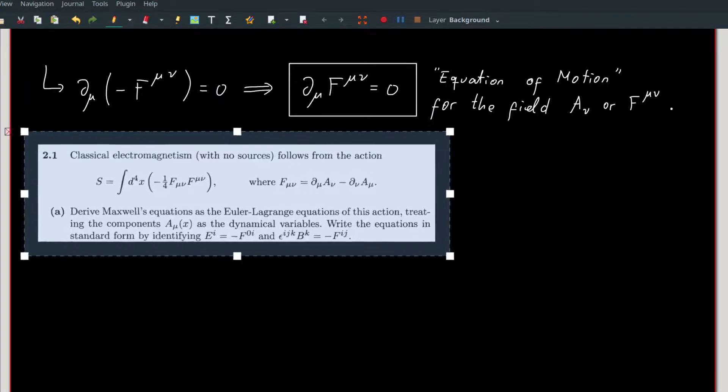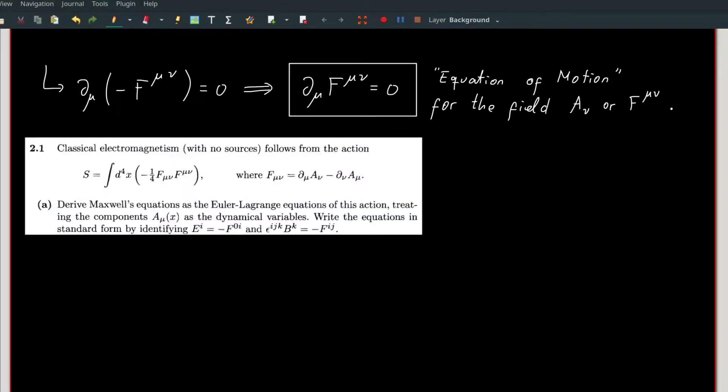Looking back, the problem wants us to express this equation in the standard form by identifying the i-th component of E is negative f^{0i}, and ε_{ijk} times k-th component of B is negative f^{ij}. Here, i and j both range from 1 to 3, and epsilon is the Levi-Civita symbol.